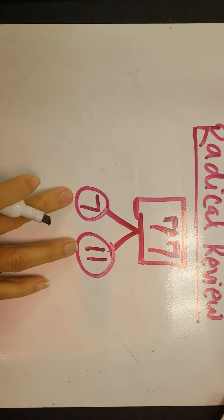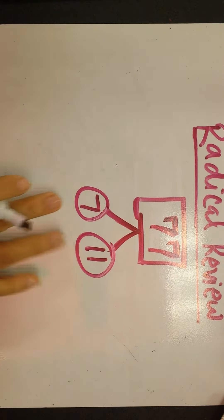Alright guys, welcome to Radical Review. So today we're going to be looking a little bit at Algebra 1 in order to do what we need to do. We're going to be taking a look at Radicals — these little signs, otherwise known as square roots. You can have different Radicals, but the only one we're really going to look at today is the square root.